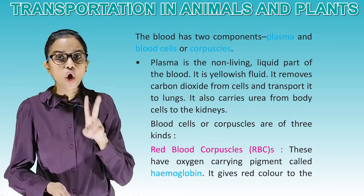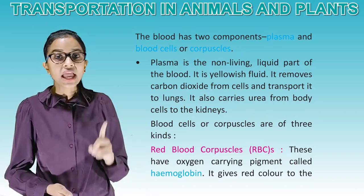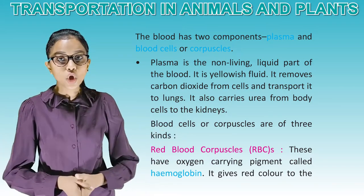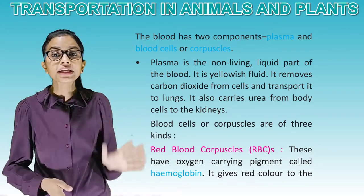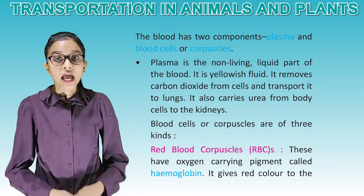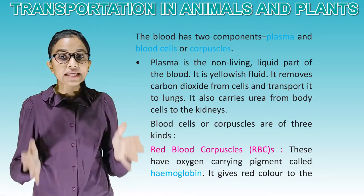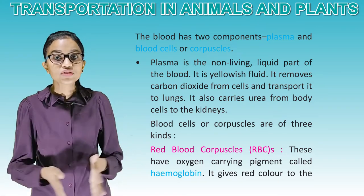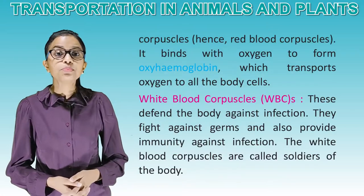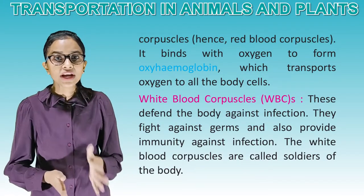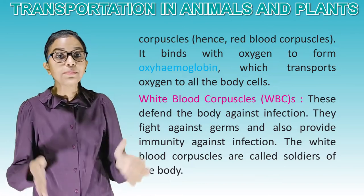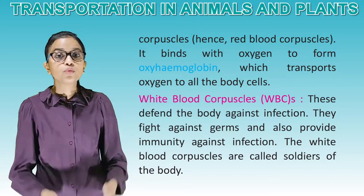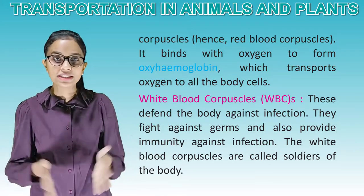The blood has two components: plasma and blood cells or corpuscles. Blood cells or corpuscles are of three kinds. Red blood corpuscles, that is RBCs, have an oxygen-carrying pigment called hemoglobin. It gives red color to the corpuscles, hence red blood corpuscles. It binds with oxygen to form oxyhemoglobin, which transports oxygen to all the body cells.